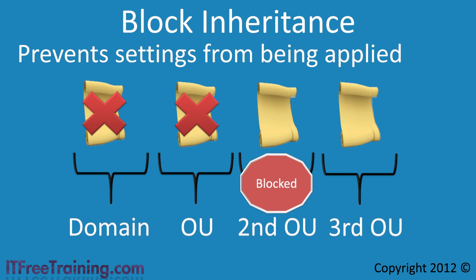To get around this problem, Group Policy allows an option called Block Inheritance. This setting is configured at the OU level. If Block Inheritance is applied to an OU, the Group Policy from above is no longer applied to that OU. Blocking Inheritance allows you to have a clean slate, configuring Group Policy settings for an OU without worrying about settings applied above it. Note that child OUs below the blocked OU can still inherit settings from the blocked OU, and blocking inheritance will not prevent settings after it from being applied.